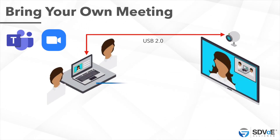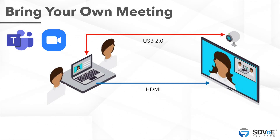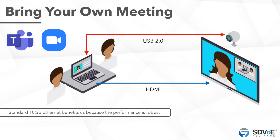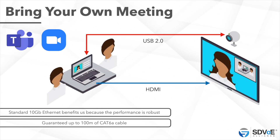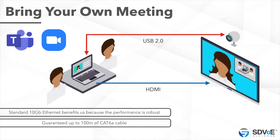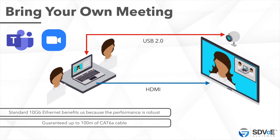The nice thing about SDVoE is that it not only extends the audio and the video but also USB and other control signals within the room, such as RS-232 or infrared control. Because it is standard 10 gigabit Ethernet, we can benefit from the fact that the Ethernet standard ensures performance is robust and guaranteed up to 100 meters of cat 6a cable. There's no degradation as the cable gets longer.